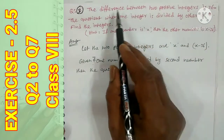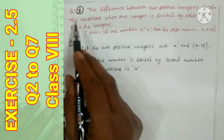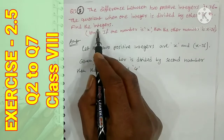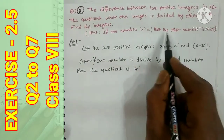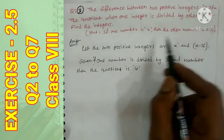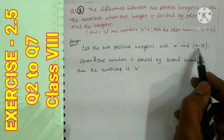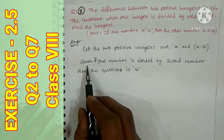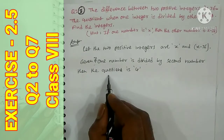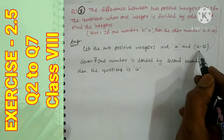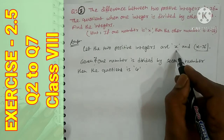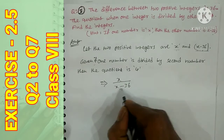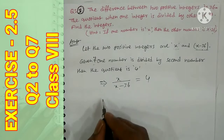Question number 3: The difference between 2 positive integers is 36. When one integer is divided by the other, the quotient is 4. Find the integers. We let one number be x, then the other number is x minus 36. So the two positive integers are x and x minus 36. One number divided by the other: x divided by (x minus 36) equals 4.